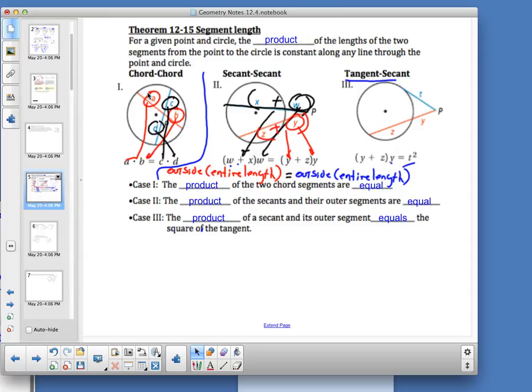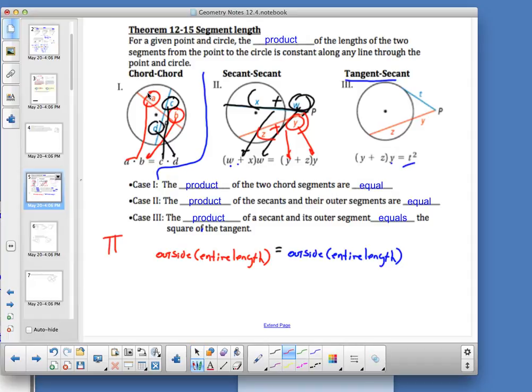The outside value times the entire length is the relationship we're looking at. That's why I've got this written down. Make sure you have this because these last two, this is for two and three. The outside length of the segment is the length from the circle to where they meet. And the entire length of the circle, the entire length, meaning going from the place where they meet to the far side of the circle.